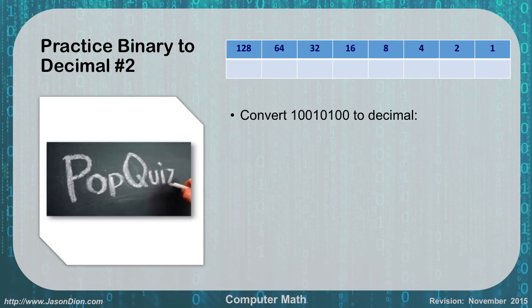So in this one, we should have 10010100. We're going to add up 128, 16, and 4, which should give us 148.